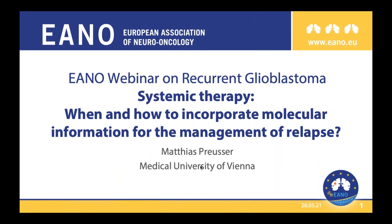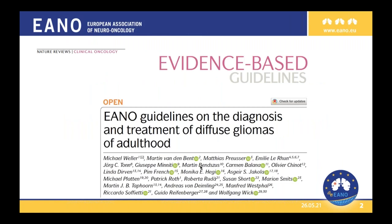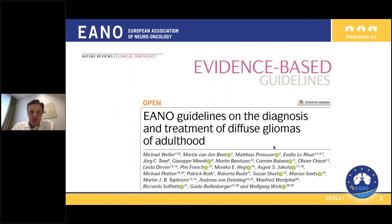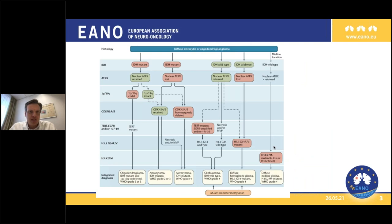I will discuss systemic therapy, but not so much the systemic therapy options we have in recurrent glioblastoma, but I will discuss whether and which molecular markers to incorporate, or what we know about molecular markers and how they may be useful or may not be useful in recurrent glioblastoma. We have recently published an update on the EANO guidelines because several new trials came out, for example on immunotherapies, but especially new information on molecular profiling and molecular classifications in gliomas.